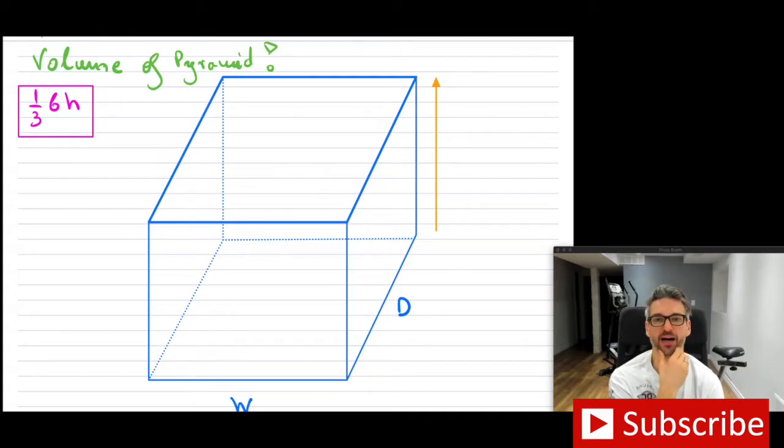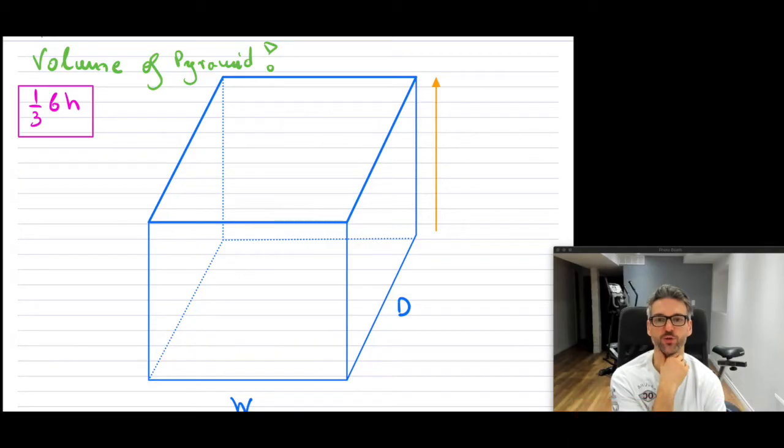Base times height for prisms is very understandable. So you can take a look, and I'm going to assume that we kind of have a cube. Now that basically would mean that you would have the base times whatever height the cube or the prism is, and then you have your volume. That's not a problem.